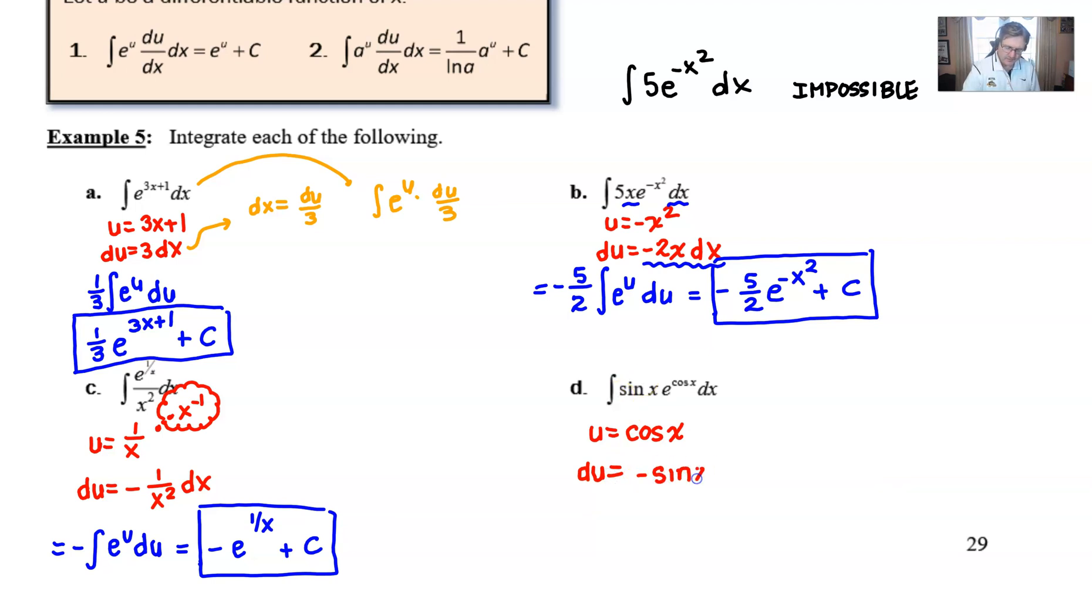Now, don't forget, the derivative of cosine of x is negative sine of x. So, this sine of x absolutely has to be here in order for you to be able to do this problem.